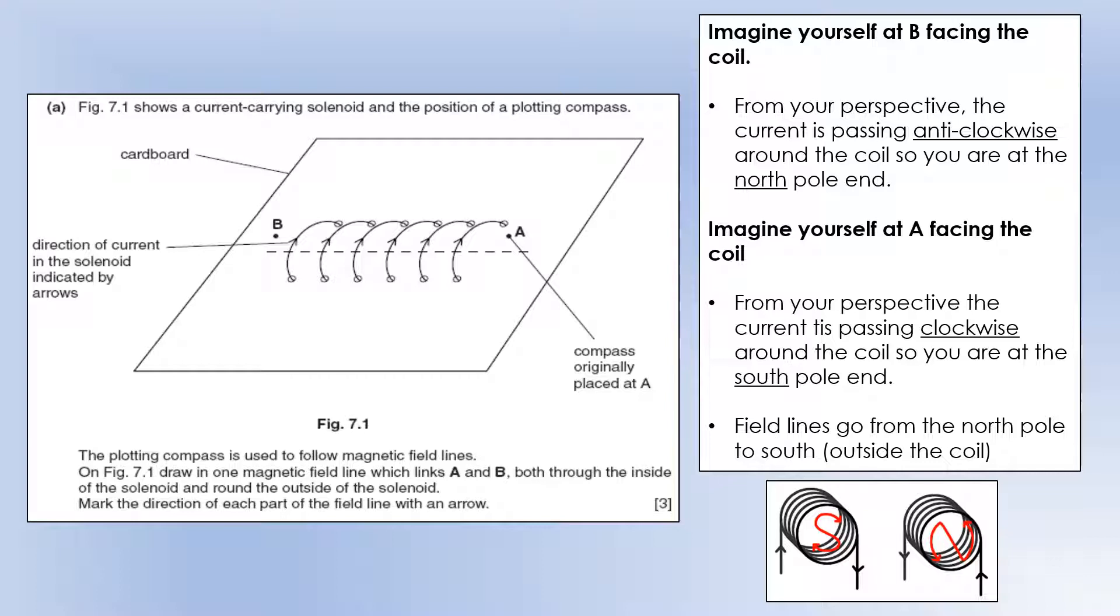And the other thing we need to use to draw this is, remember, field lines go from north pole to south pole if they're travelling outside of the coil. And a useful way of remembering this rule is shown by these two diagrams. So if you draw an S, and you let the ends of the S, you see if you have a clockwise current, you can see the arrows pointing around in an S. If you have an anti-clockwise current, you can see the ends of the N indicate going anti-clockwise, so you're at a north pole end.